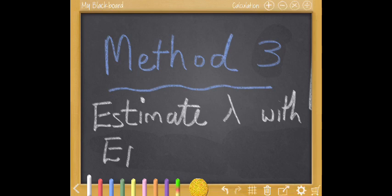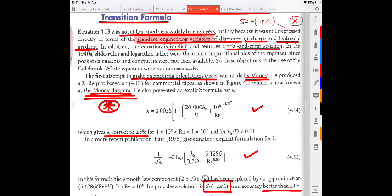Alternatively, we can skip all the dirty work and estimate lambda directly with equation 414 or any other method for estimating lambda. You will find a few examples in your textbook. Now we have everything under control and can find HF easily.